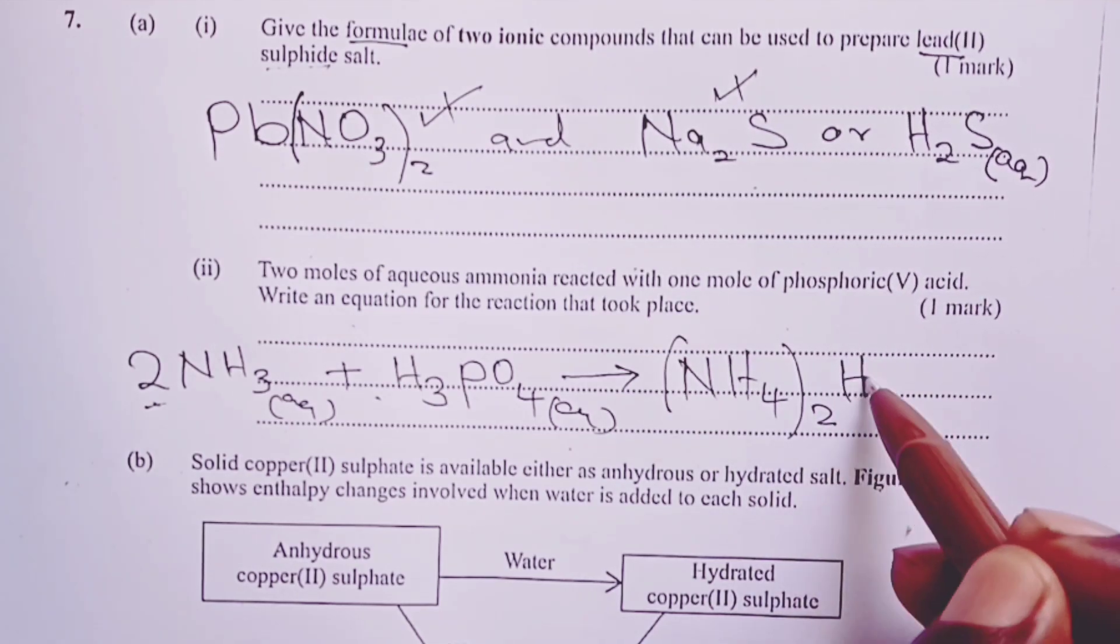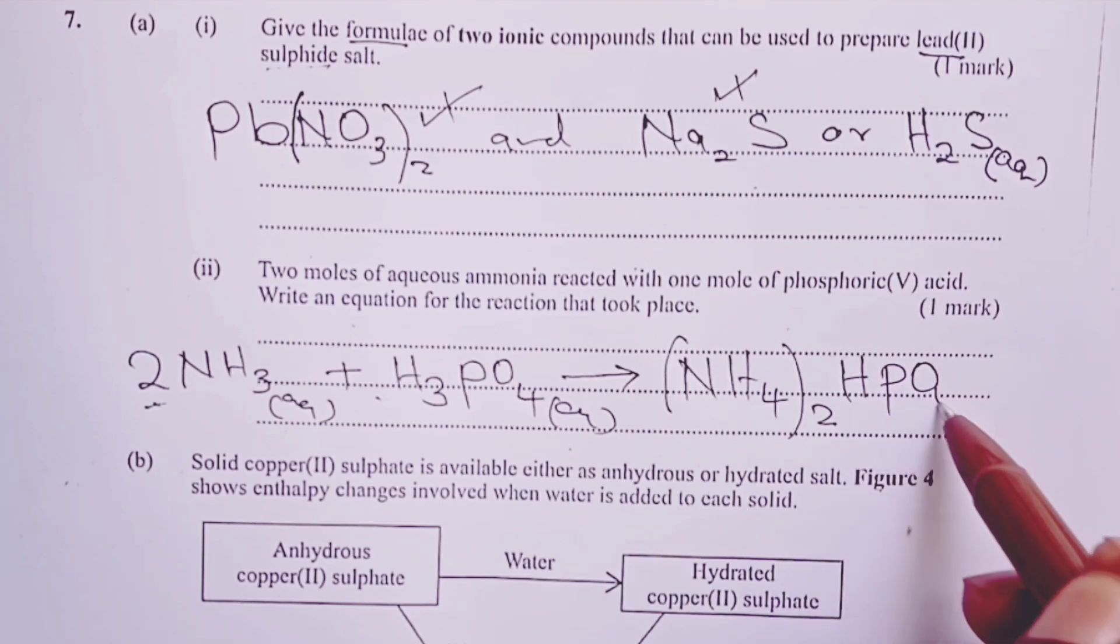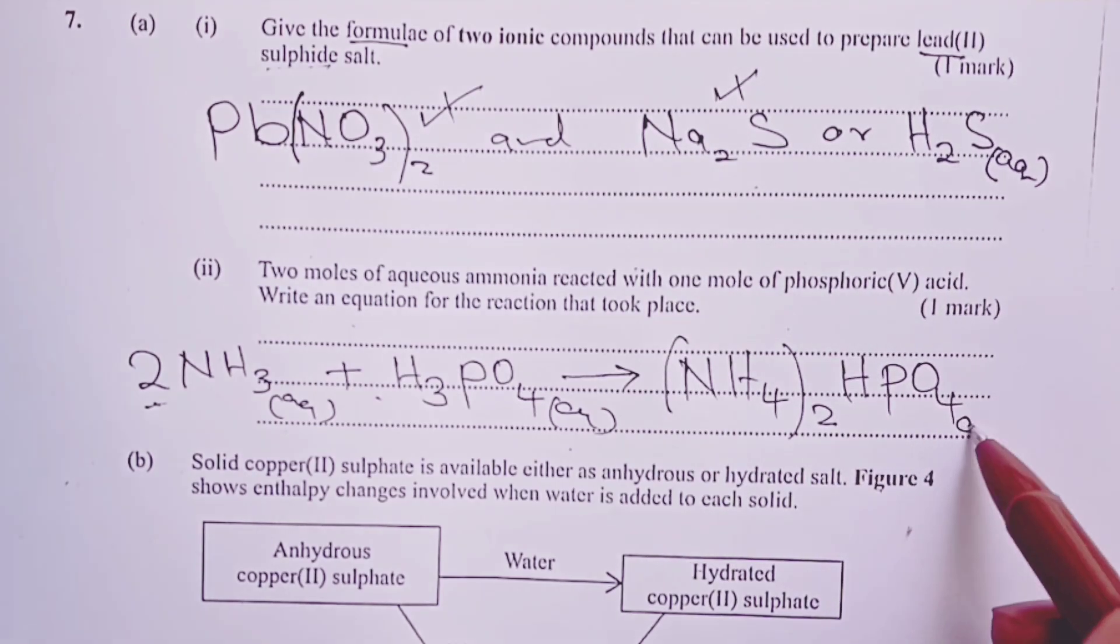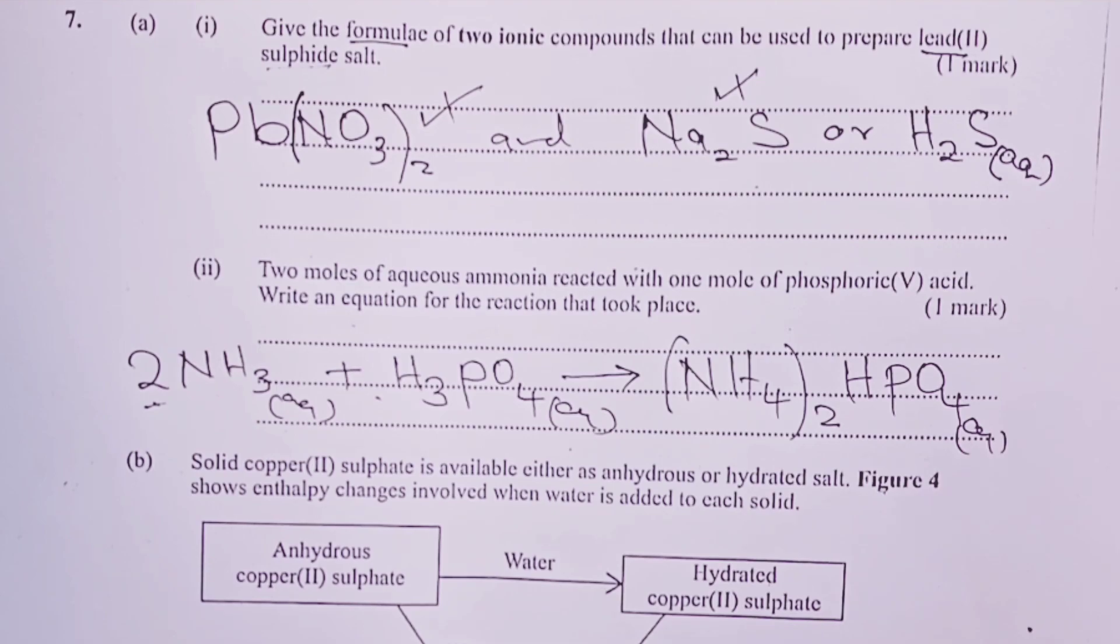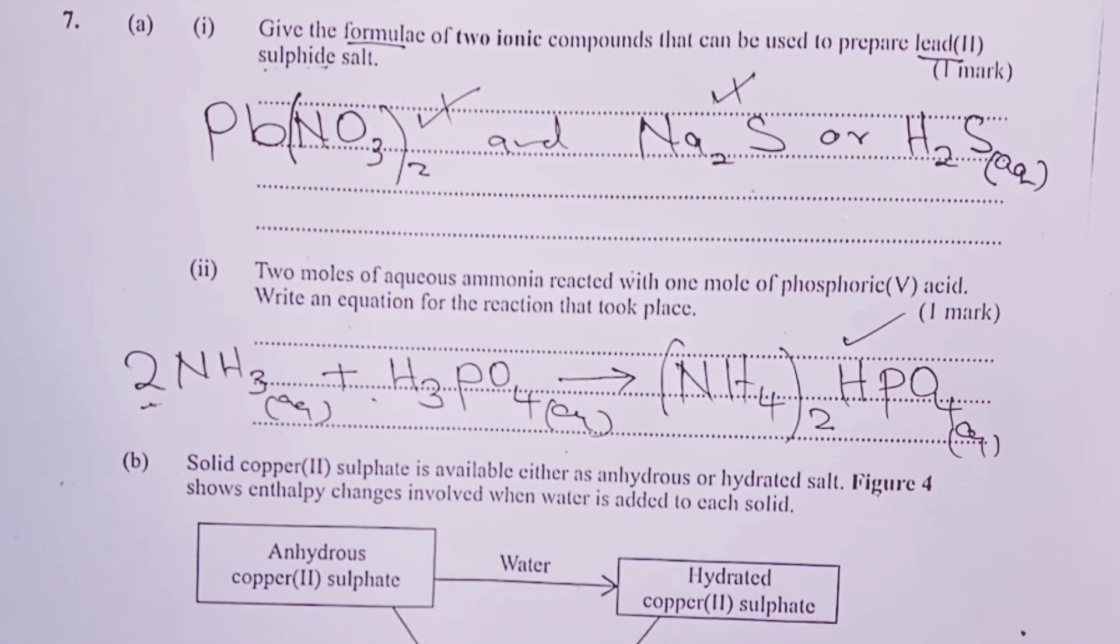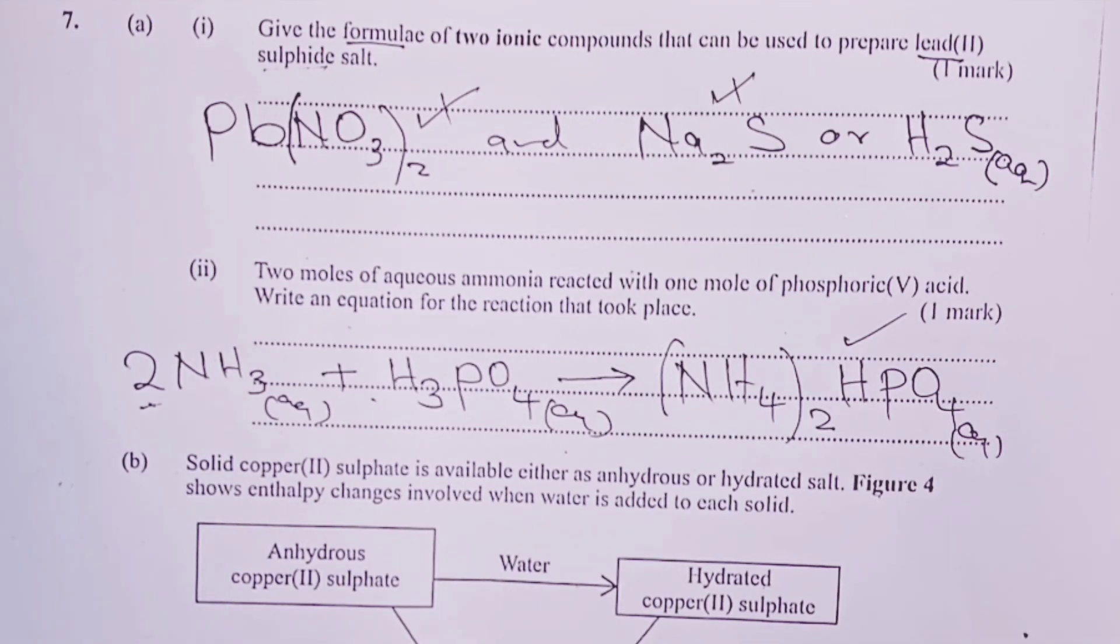It therefore means that the only product we can form here is ammonium hydrogen phosphate. That would be the only product available to be formed in a case where two moles of ammonia is reacting with one mole of phosphoric acid.